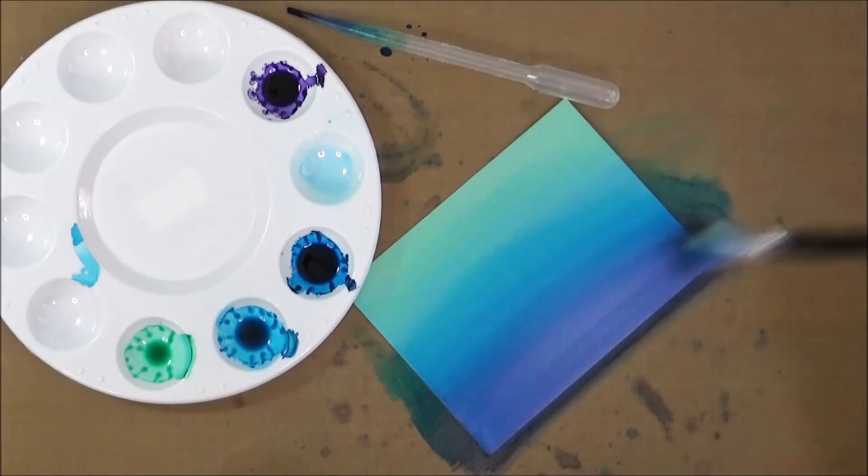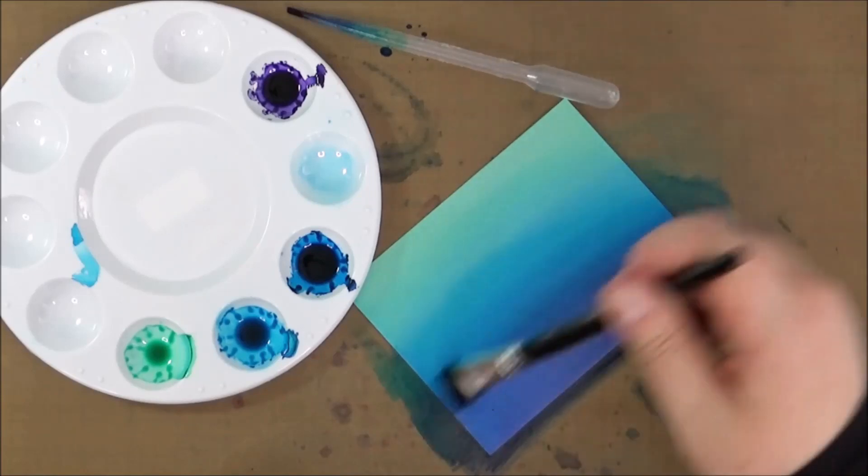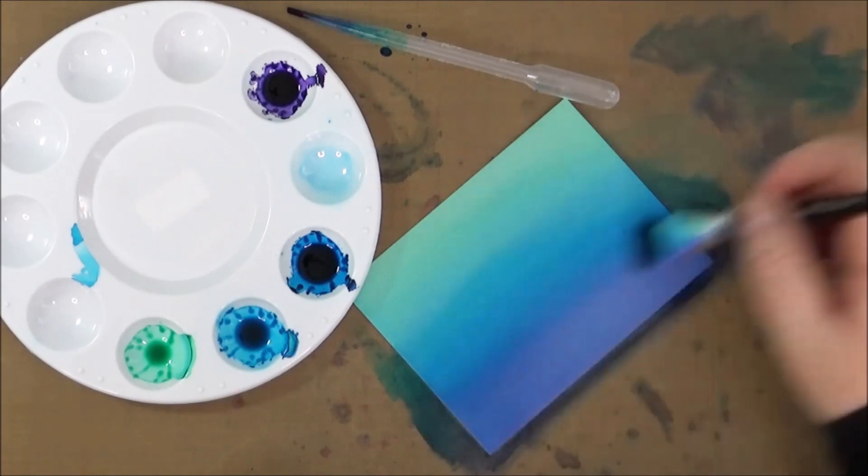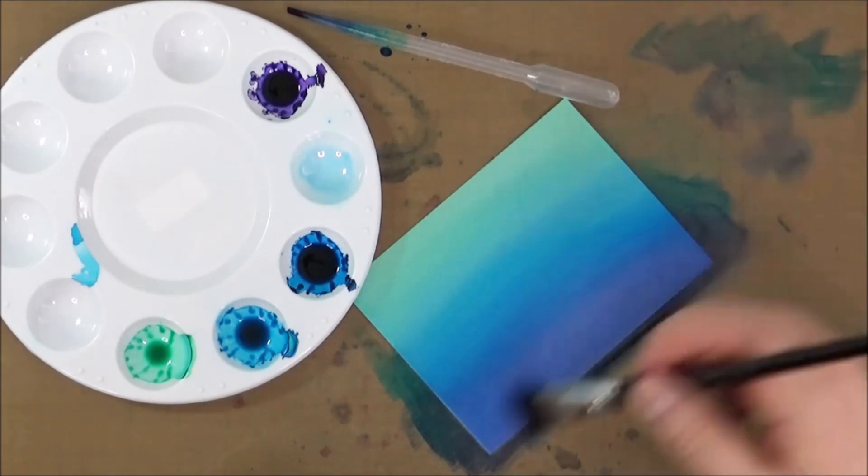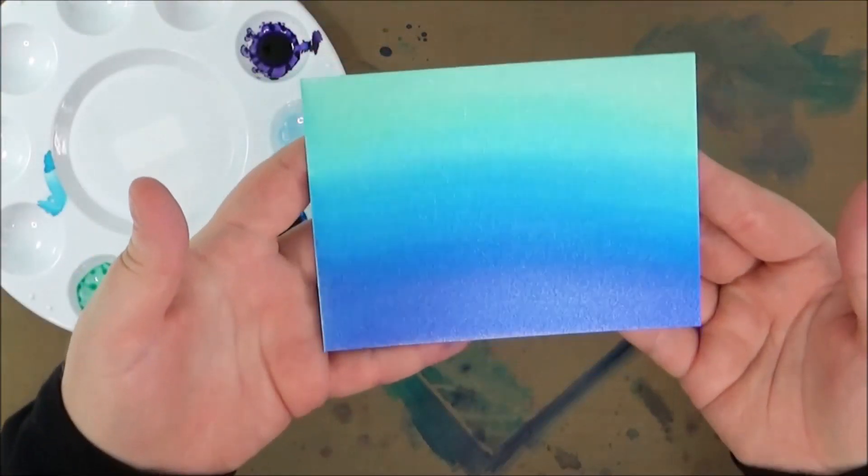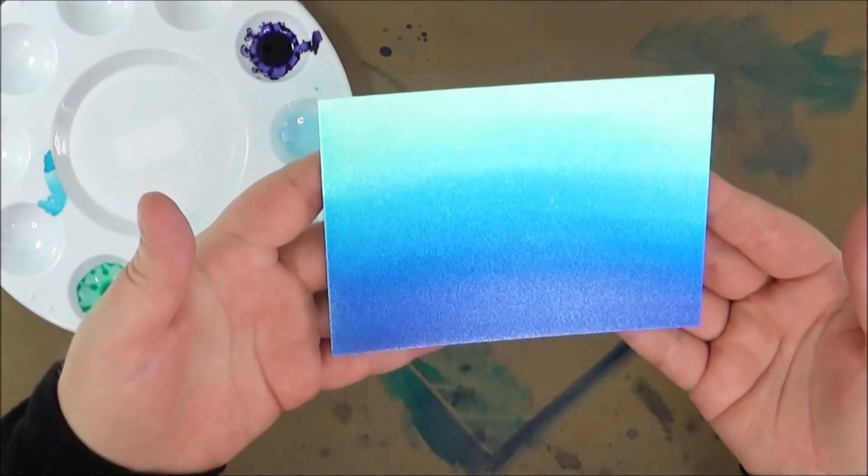Once all that color is down and I'm happy with it, I'm setting that piece aside to dry. It dried very quickly. I'm going to clean off my brush and palette with some Copic cleaner. That alcohol ink background is really sparkly in real life, very pretty.